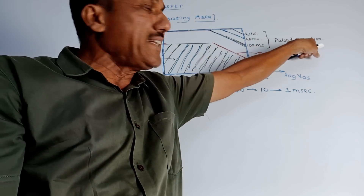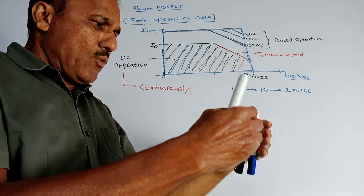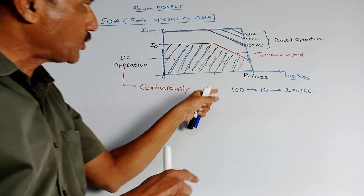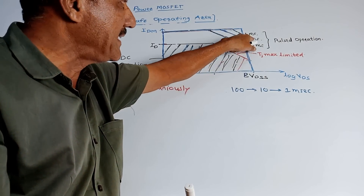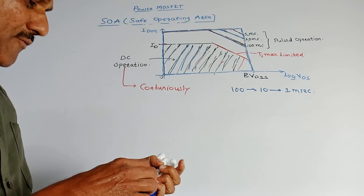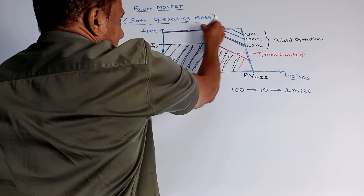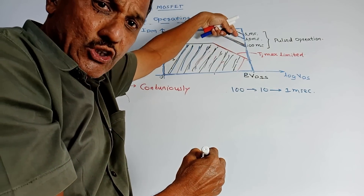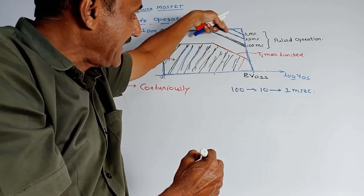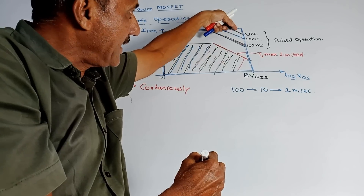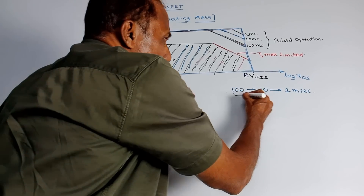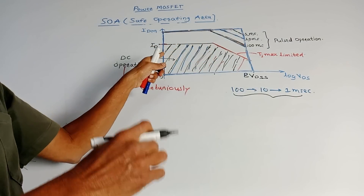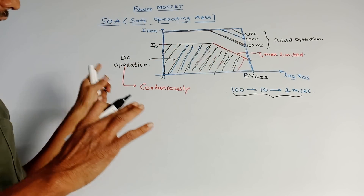There is one more type of operation: pulsed operation. In pulsed operation, the device is not operated in continuous mode but in discontinuous mode — different pulses are applied. For example, with 100 millisecond pulses, the area gets increased compared to DC operation. If you reduce the pulse width to 10 millisecond, the area increases further. At 1 millisecond, the area becomes maximum. So as you reduce the pulse width from 100 to 10 to 1 millisecond, the safe operating area goes on increasing. This completes the safe operating area of Power MOSFET.